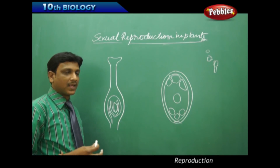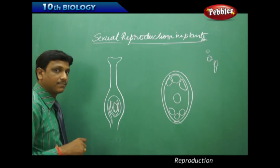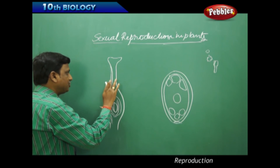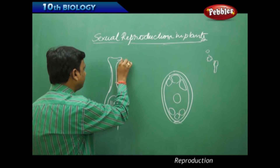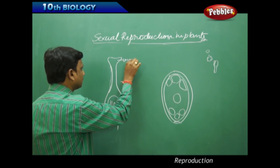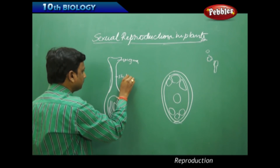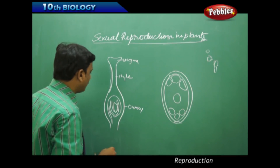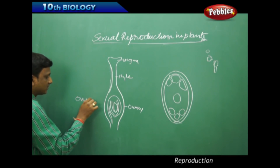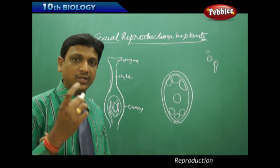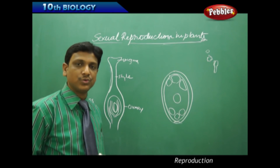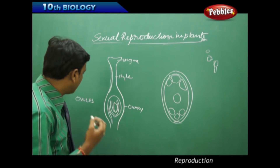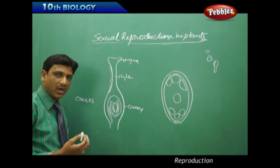Now let us see what happens to the pollen grain once it reaches the female reproductive system. The gynoecium of a plant consists of a stigma, a style, and an ovary. The ovary consists of ovules. Some flowers may have only one ovule; some may have two, three, ten, or in some cases hundreds of ovules. Depending on the species, the number of ovules can range from one to hundreds.